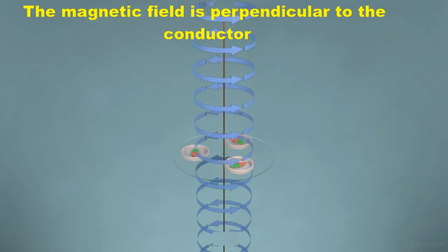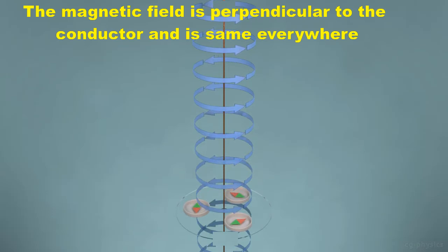The magnetic field is perpendicular to the conductor and is same everywhere.